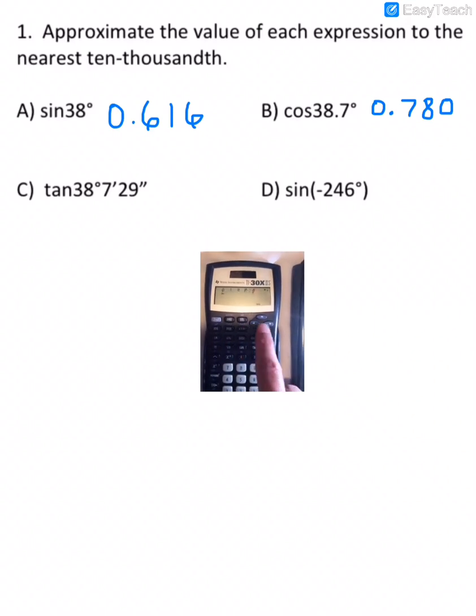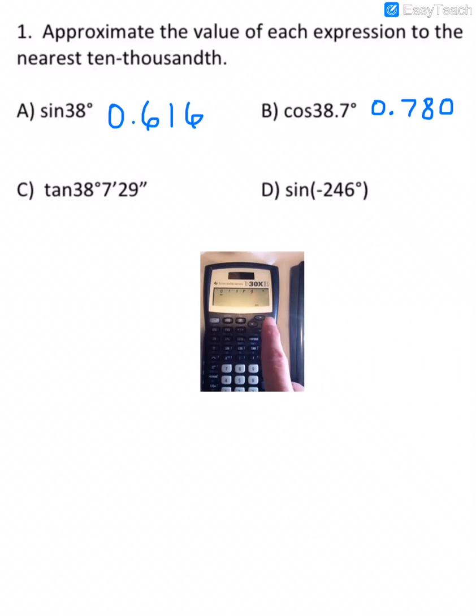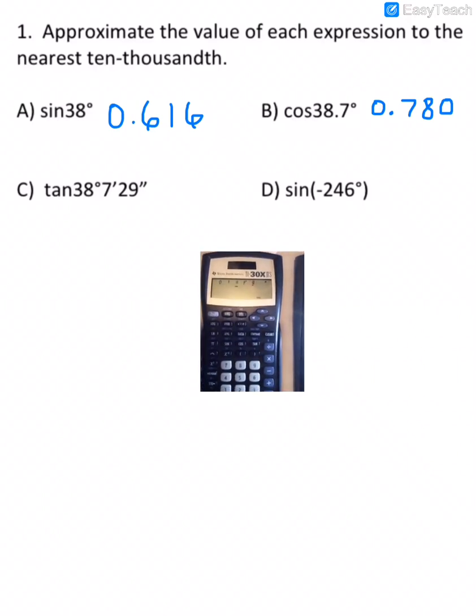If I press this again and scroll over, that's minutes. And then 29 seconds, so I'll press it again, scroll over twice to get to the seconds button.